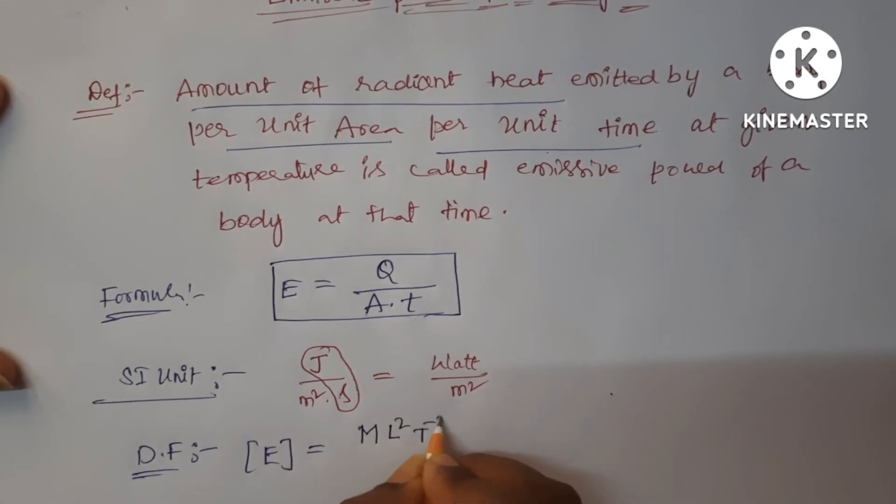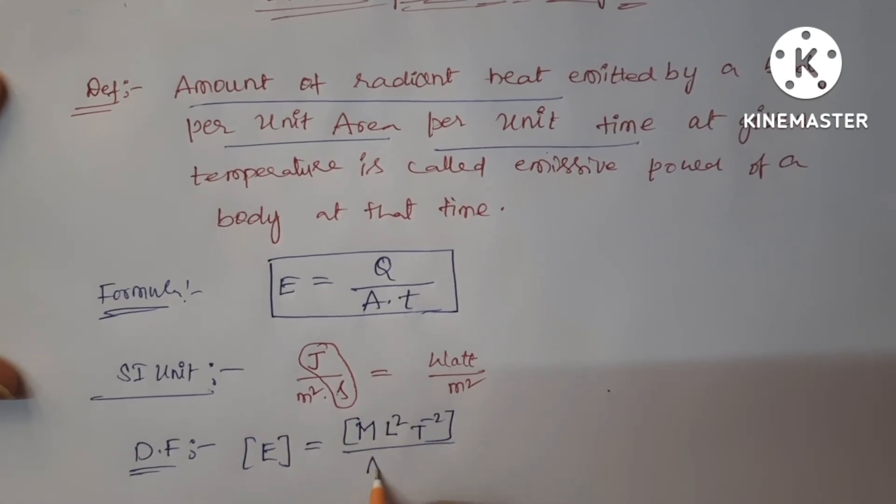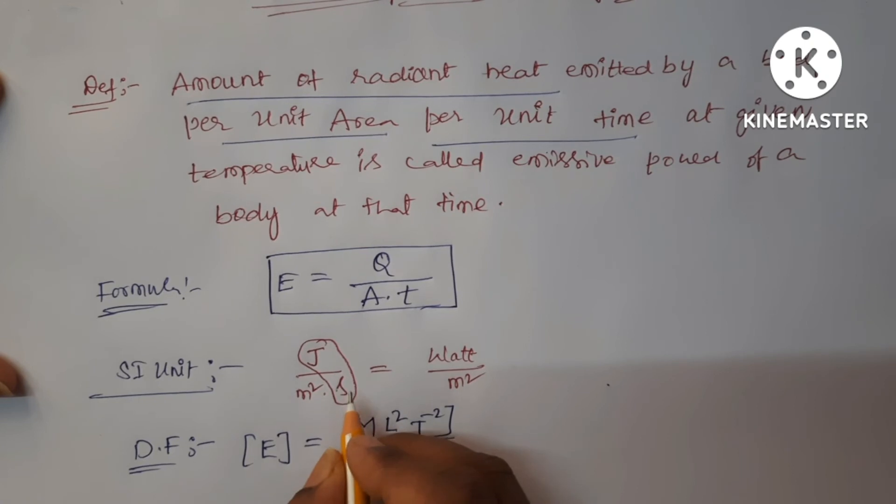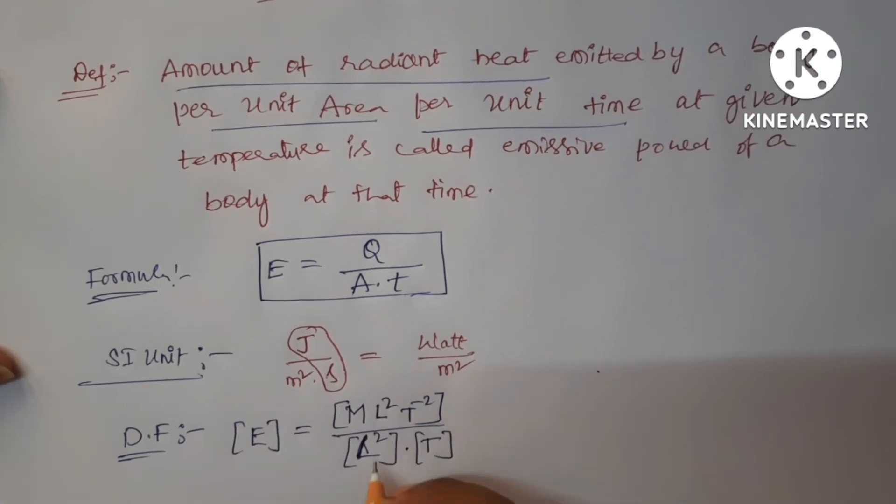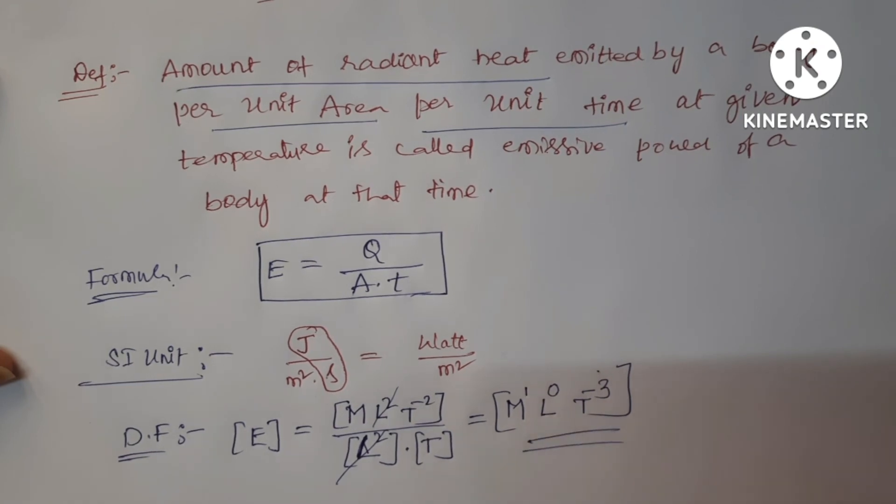Upon here meter square is there, so area which is L square, into here second is there, which is time. Now here L square and L square will get cancelled. The remaining terms are M power 1 and length is absent, so L power 0 and T power minus 3. This is the dimensional formula of emissive power.